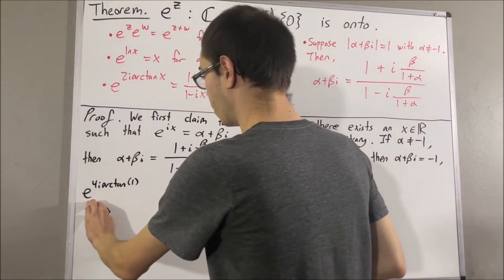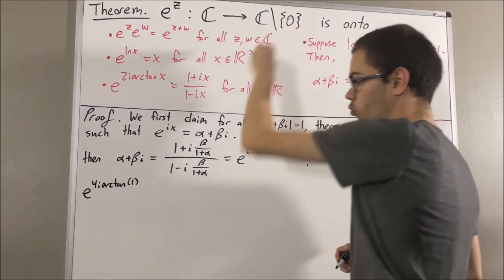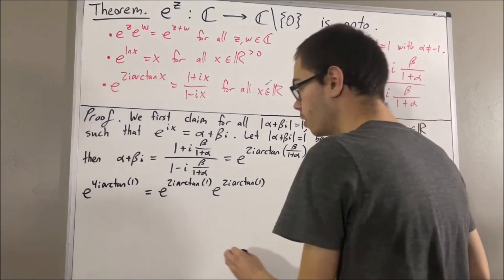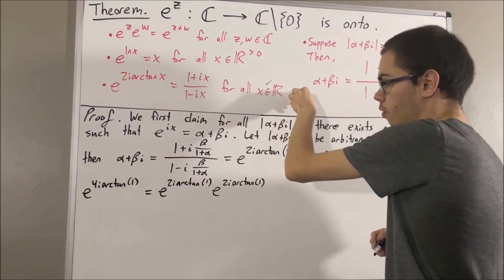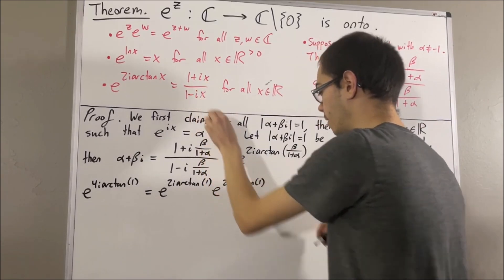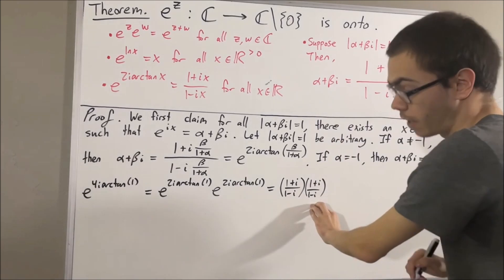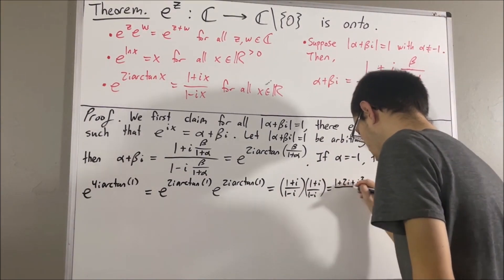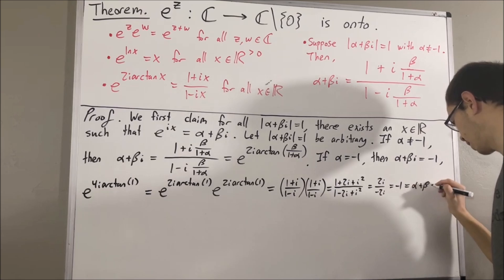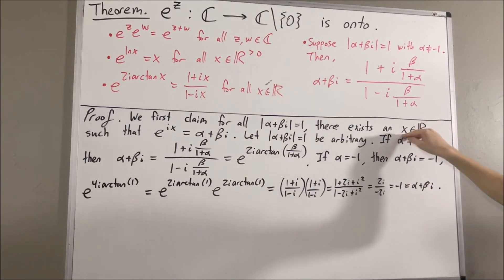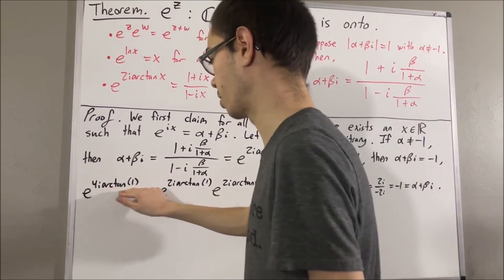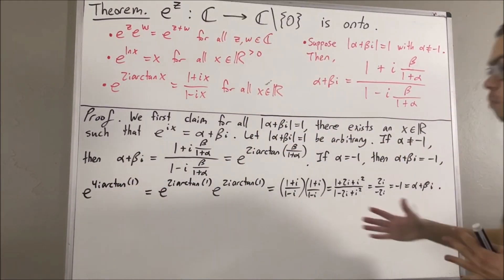By our first fact, we can re-express e^{i·4·arctan(1)} using the multiplication rule, and by our third fact (taking x = 1), both expressions equal (1+i)/(1-i). This simplifies to -1. And -1 equals alpha + beta·i in this case. So we have found a real number x such that e^{ix} equals alpha + beta·i — just take x to be 4·arctan(1). This completes the proof of our claim.